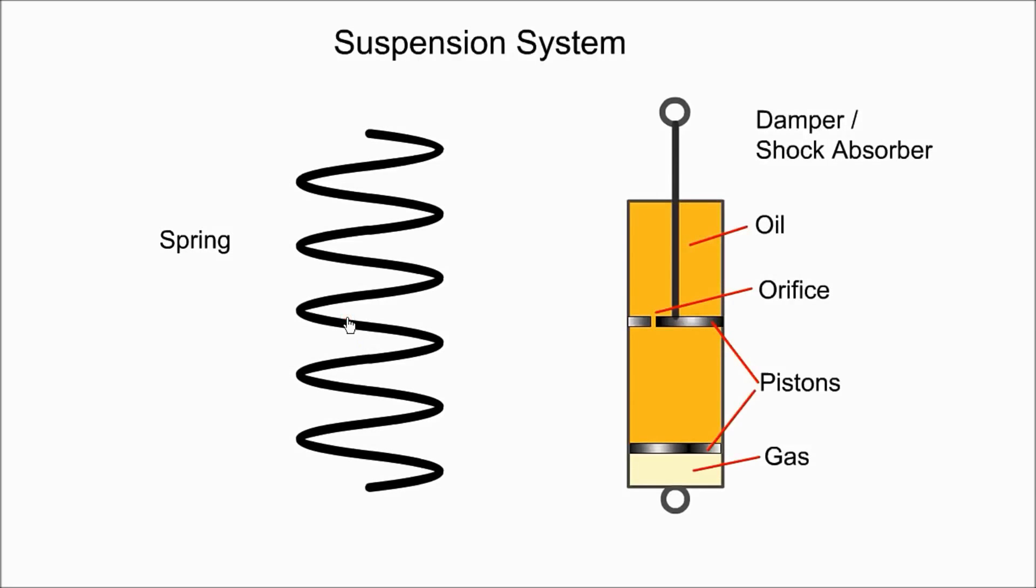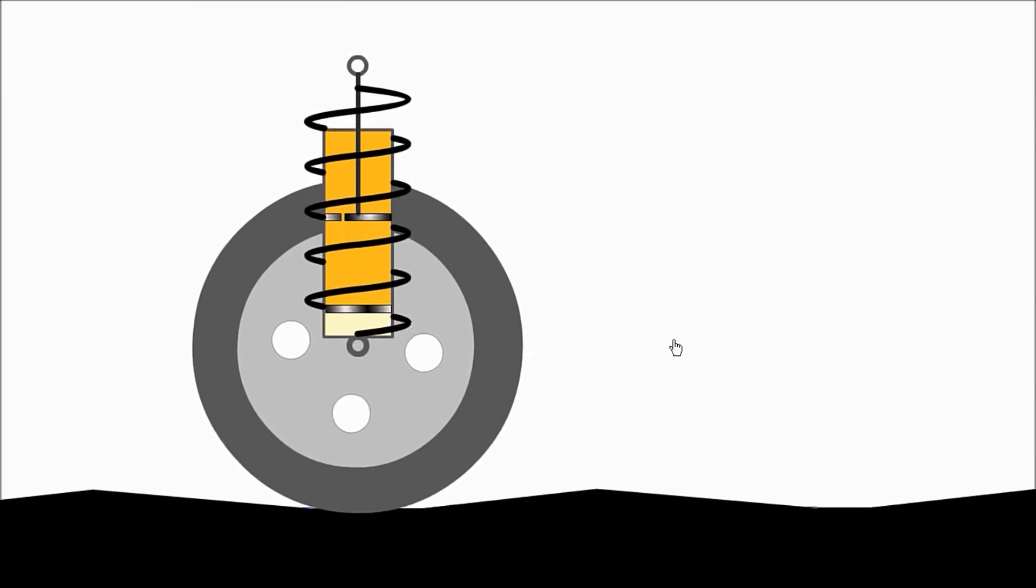Coil springs store and absorb shock energy by compressing and extending. When the wheel is pushed upwards by the bump, the spring prevents the shock from reaching the chassis and maintains the tire in contact with the road. A damper converts the oscillations of the spring to thermal energy. The damper is filled with oil. When the car hits a bump, the oil is forced through a small orifice, thus slowing down and damping the movement of the piston. The suspension consists of springs, linkages and dampers, and connects the car with the road surface through the wheels and tires.